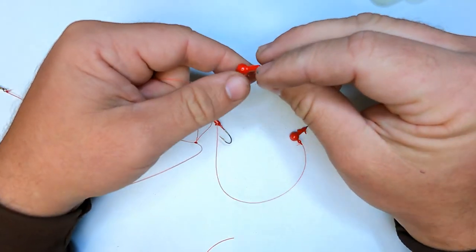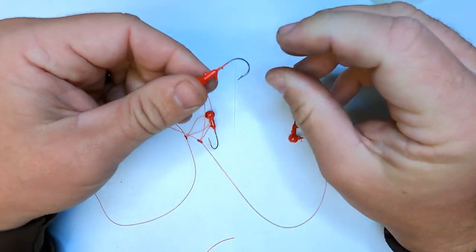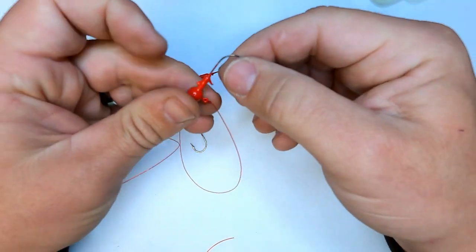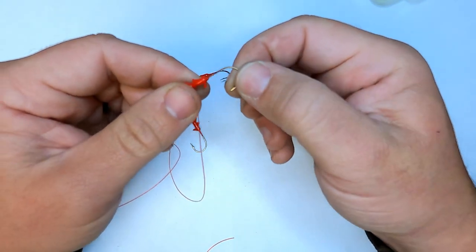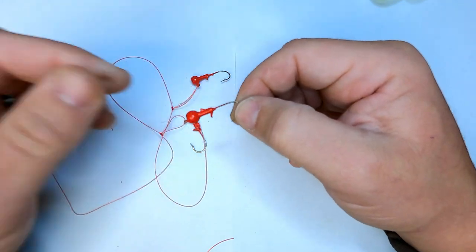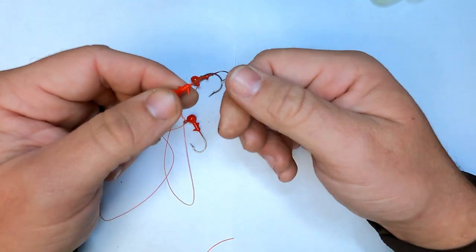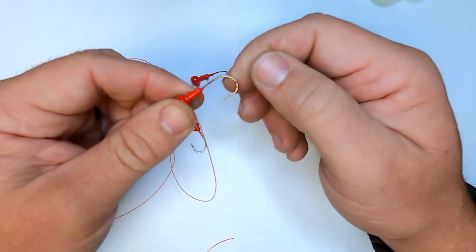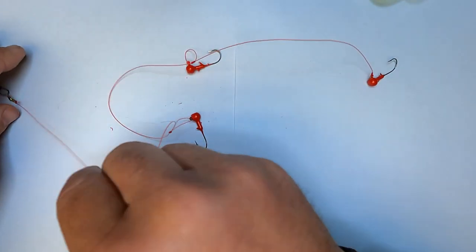But the fact that I'm using 17 pound mono, a lot of the time what will happen is whichever jig happens to be snagged, that hook will open up, pull free, and when you get it back you just take your pliers, bend it back into rough shape of a hook, and you're good to go again.